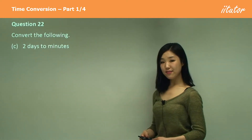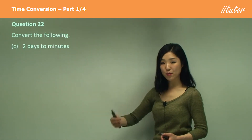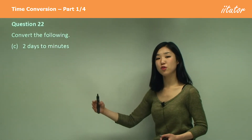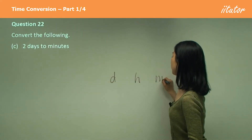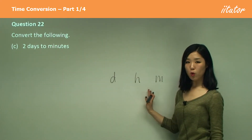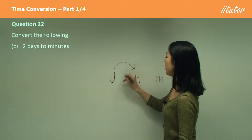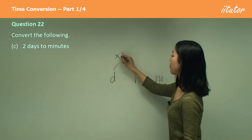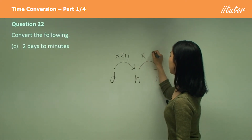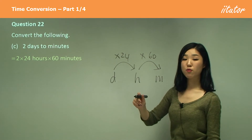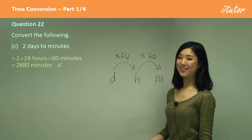Two days to minutes. From days to minutes, we go from days to hours first, then hours to minutes. So: days → hours → minutes. It's large to small, so we multiply. Days to hours: multiply by 24. Hours to minutes: multiply by 60. So times 24, times 60 — which gives 2880 minutes.